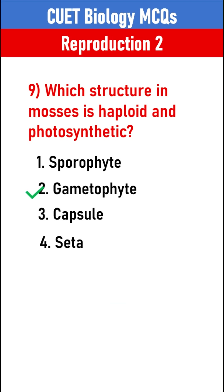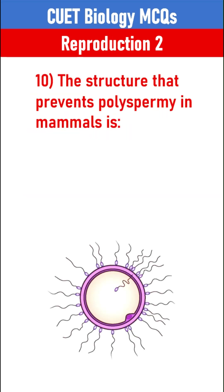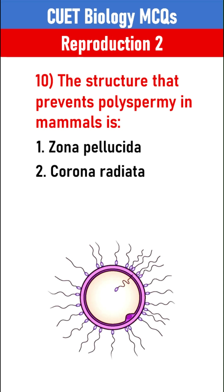Gametophyte. The structure that prevents polyspermy in mammals is